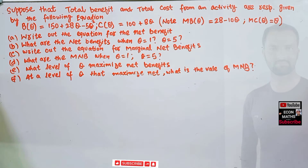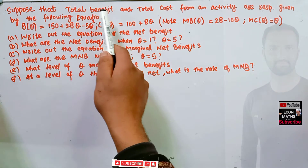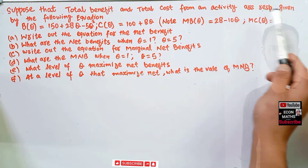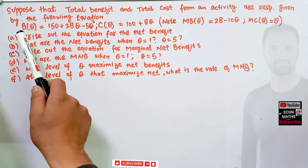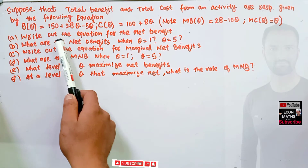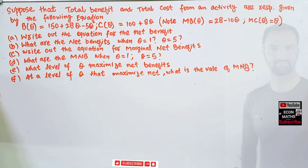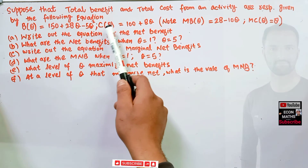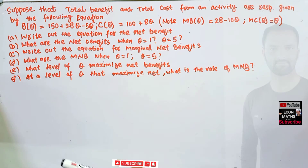Hi, this is Halal. In this video on the mathematical economics series, we will solve a problem asked by sister Ikram John regarding total benefit and total cost. The question is: suppose that total benefits and total cost from an activity are respectively given by the following equations. Total benefits: B(Q) = 150 + 28Q - 5Q², and total cost: C(Q) = 100 + 8Q.